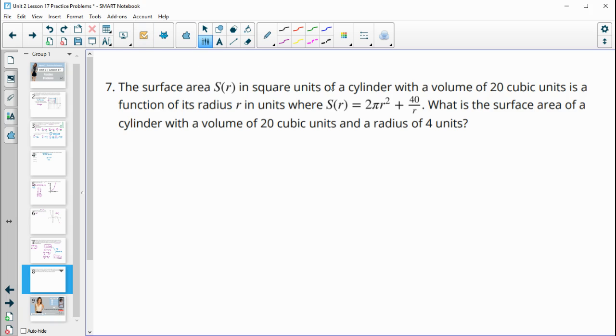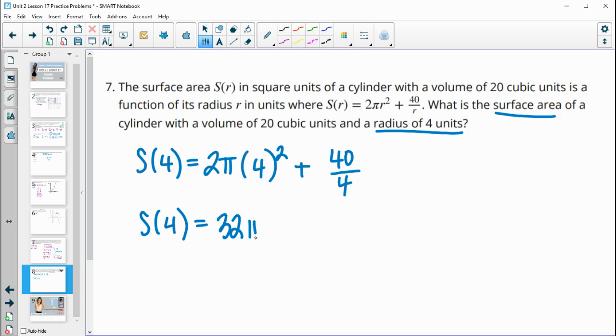Number 7, the surface area in square units of a cylinder with a volume of 20 cubic units is a function of the radius in units where s of r equals this. What is the surface area of a cylinder with a volume of 20, when the radius is 4? So we're just trying to do s of 4 here. So we're just going to plug 4 into this function. So 2 times pi times 4 squared plus 40 divided by 4. And so 4 squared is 16 times 2 is 32 with a pi. And then 40 divided by 4 is 10. So that would be the exact answer in terms of pi, we call that. Or you can plug this into your calculator, multiply in the pi, and you get about 119.3. And then this is surface area, so units squared when our radius is 4.